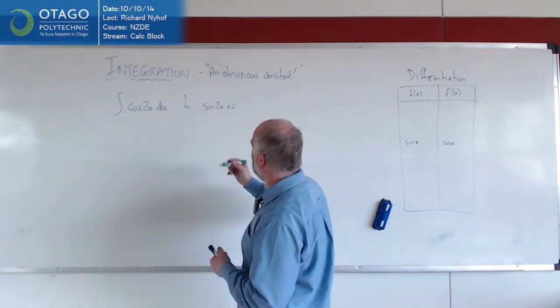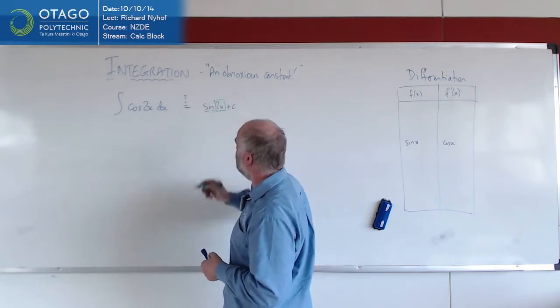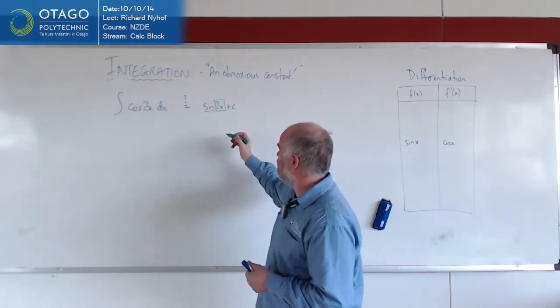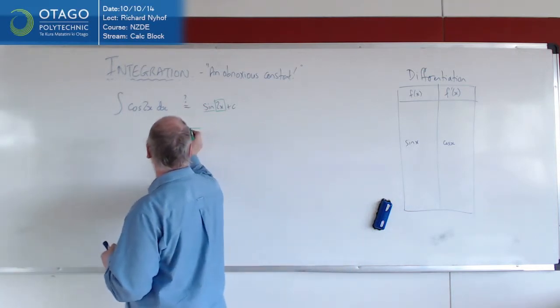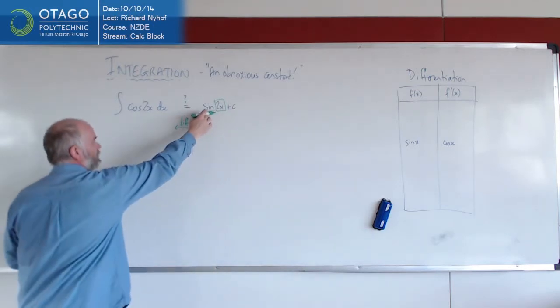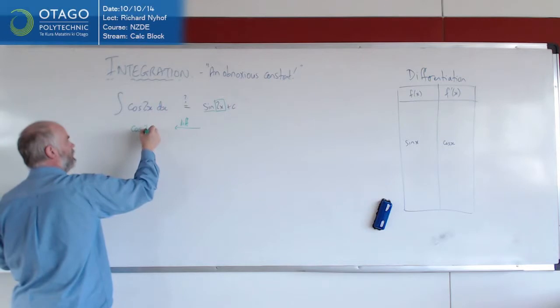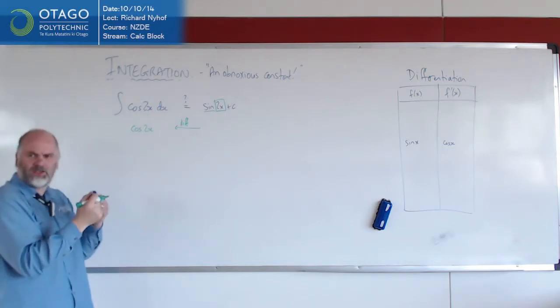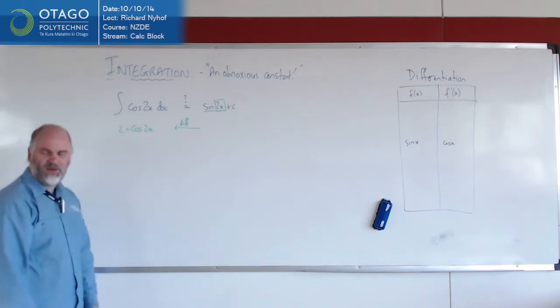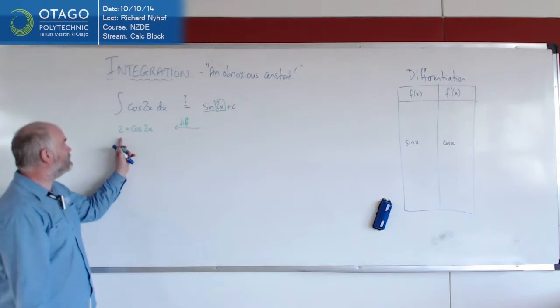Because this thing is a chain rule, isn't it? It's an inside function wrapped up in an outside function. So when we differentiate this thing, which should undo integration, it's going to be the derivative of the outside bit operating on the inside bit, so far so good, times the derivative of the inside bit. And it mucks it up. We don't get back to where we started from. We end up with a stupid 2 out the front.